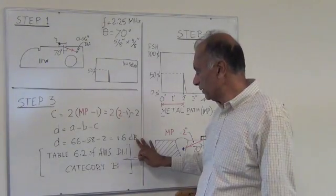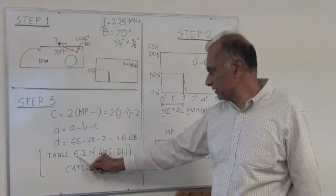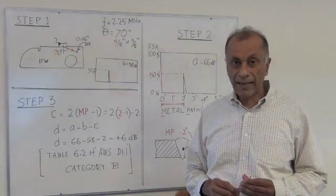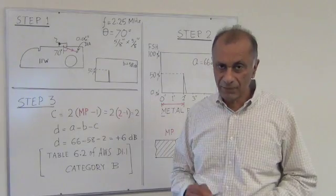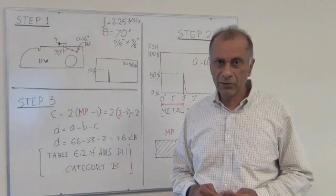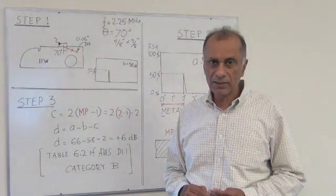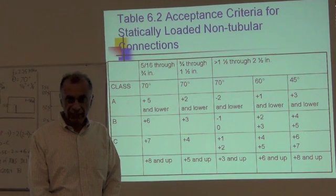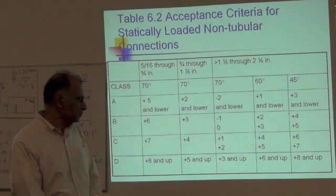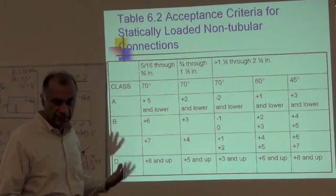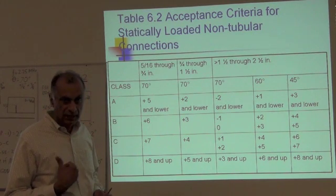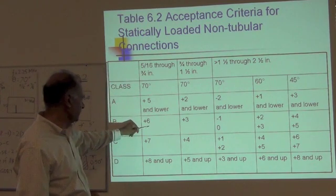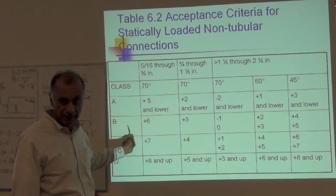Once we calculate that number, then we go to table 6.2 of AWS D1.1 to determine the class of the indication and to find if it is acceptable or rejectable. Now let's go to table 6.2. In the indication we detected, our indication rating D was equal to plus 6 dB. Since the thickness of our member was 1/2 inch, we go to this column, and plus 6 dB corresponds to a class B indication.